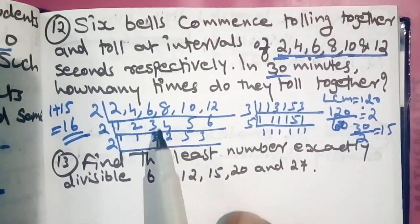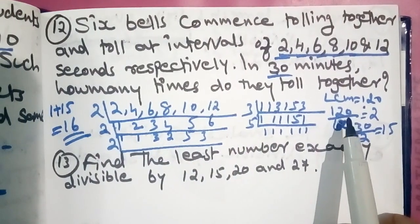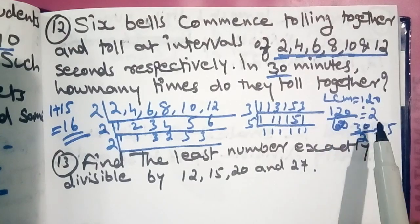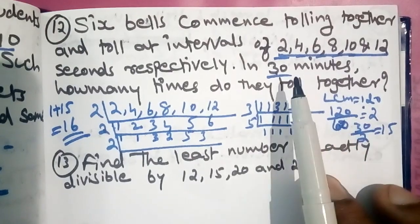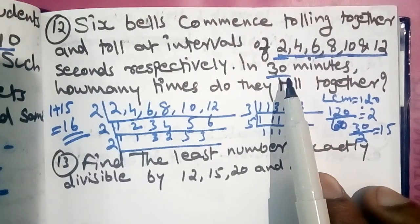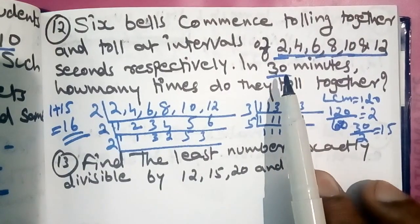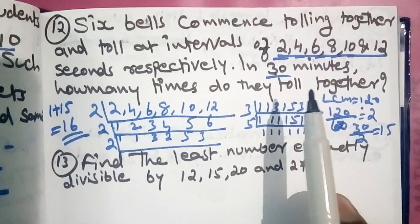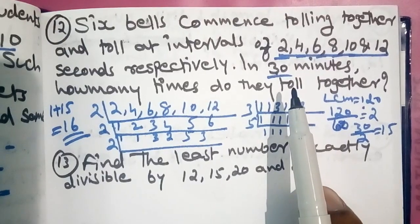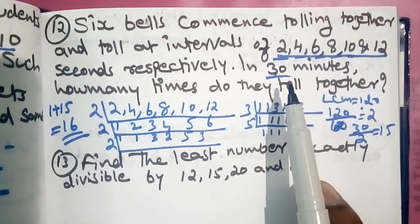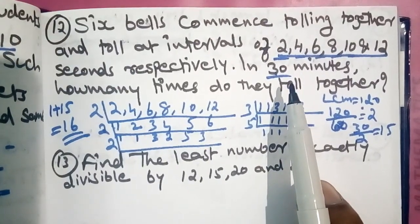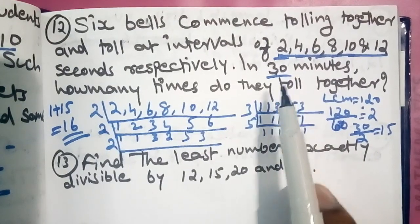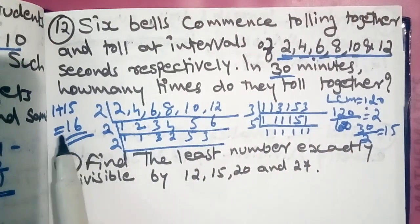If we take the LCM, go ahead and divide. A change will be divided by 15. So the most important thing is: 1 plus 15 equals 16. That means the 16th time will be the answer.